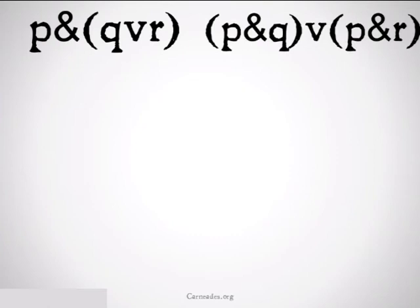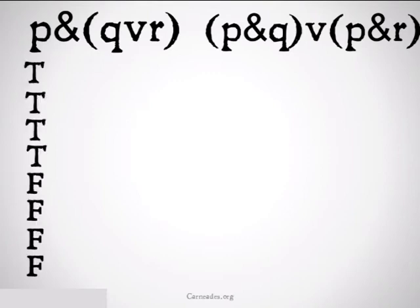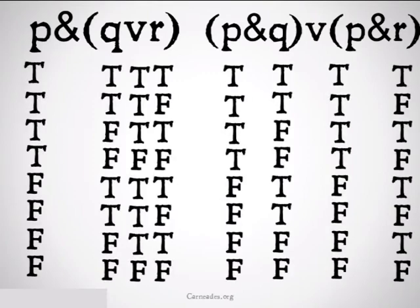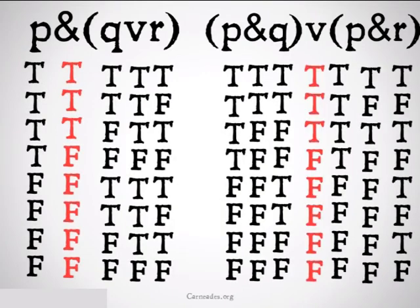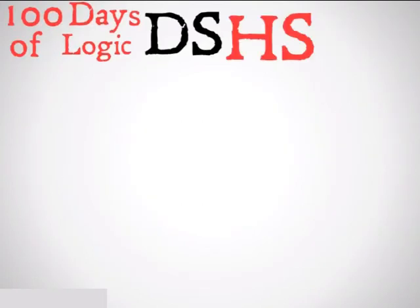We can also do this with conjunction on the outside and disjunction on the inside: P and (Q or R) can be changed into (P and Q) or (P and R). We do the truth tables once again and discover that they are the same, so they are replaceable.